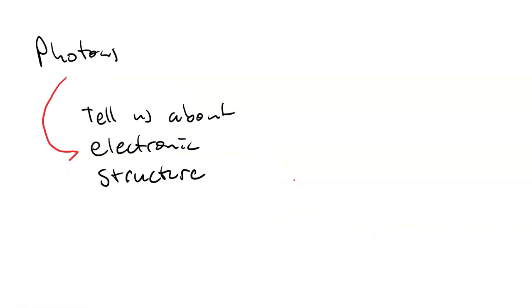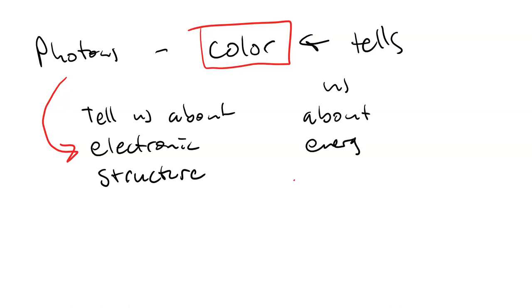So photons tell us about electronic structure. Photons have color. Color depends on the energy, so this tells us about energy differences in the states available to the electron.